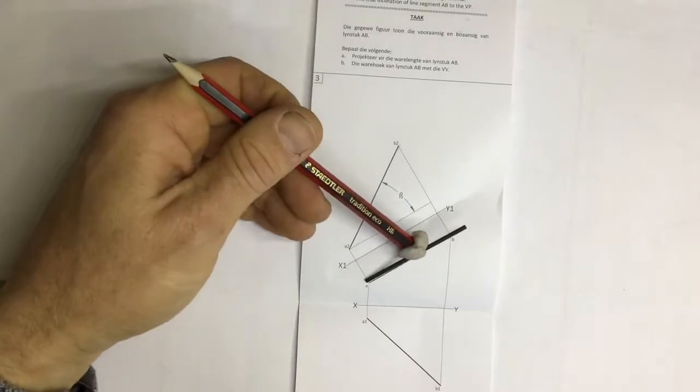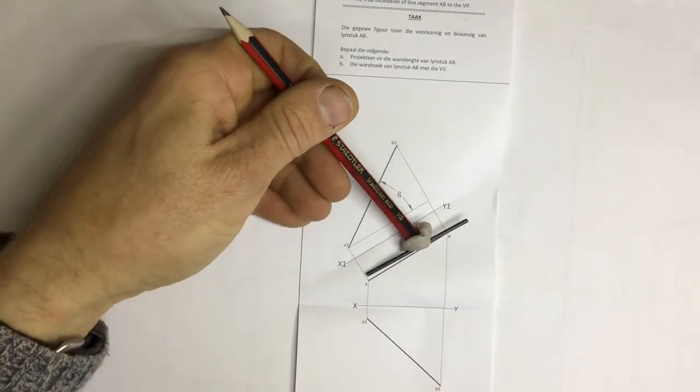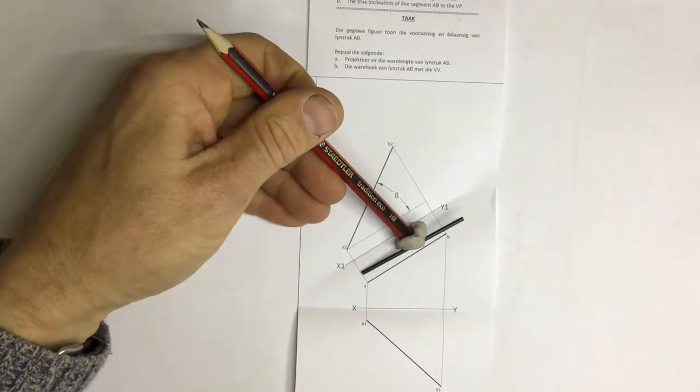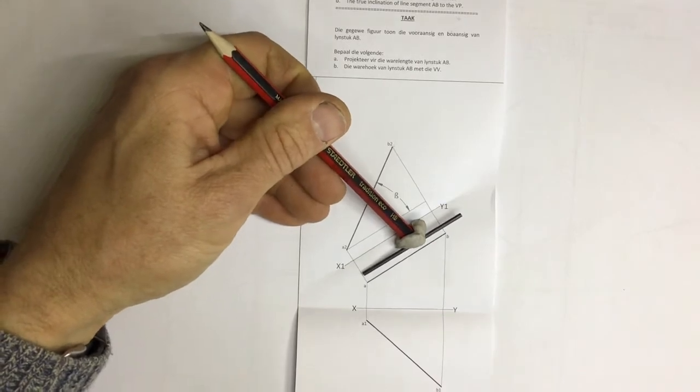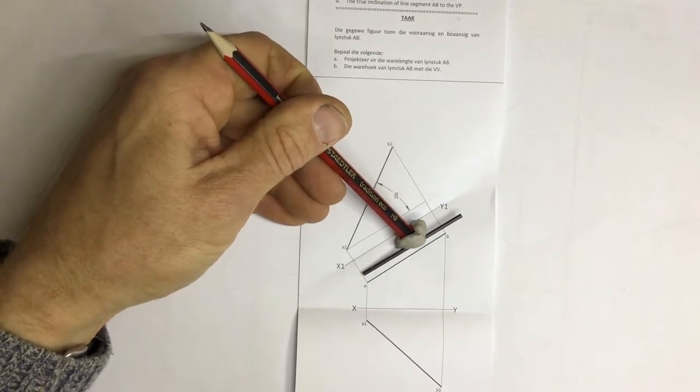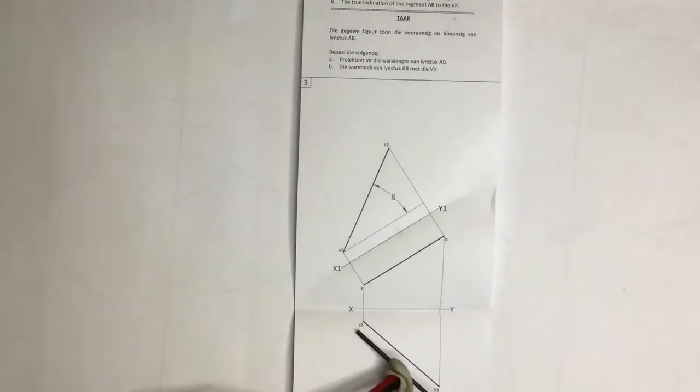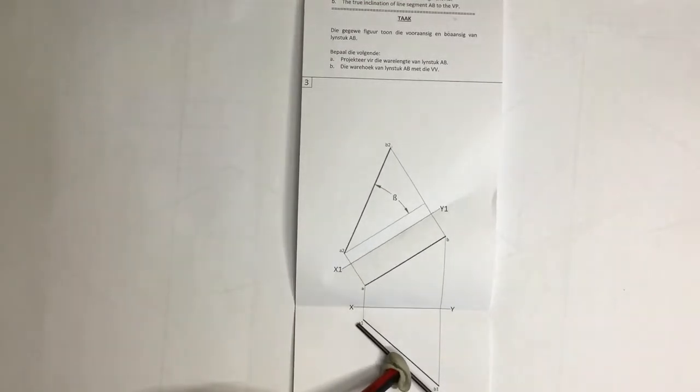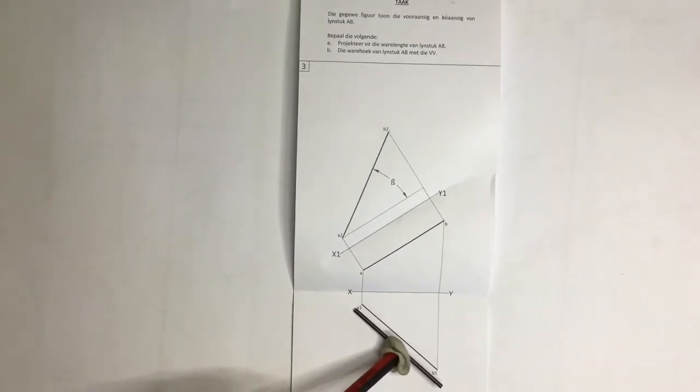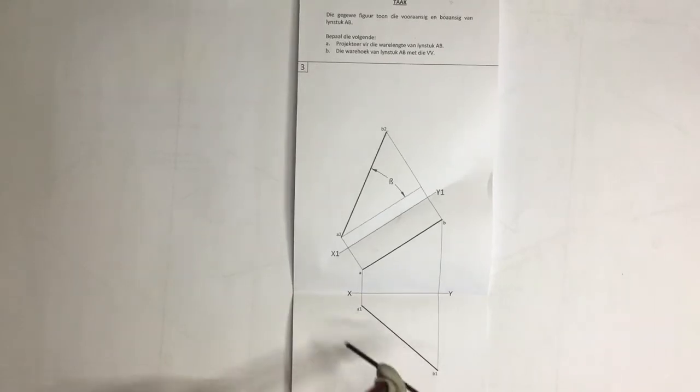If I come over here to my little line segment in my vertical plane, you'll see that the line segment in the vertical plane is much, much shorter than the actual line itself. And the same goes for the line segment in my horizontal plane, and you can see that that is much, much shorter as well.